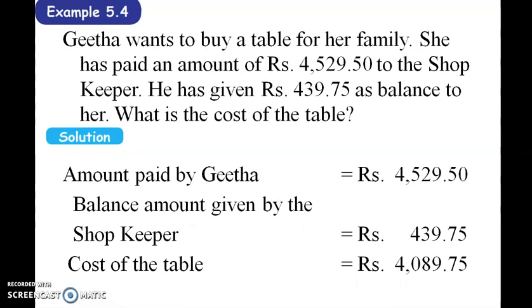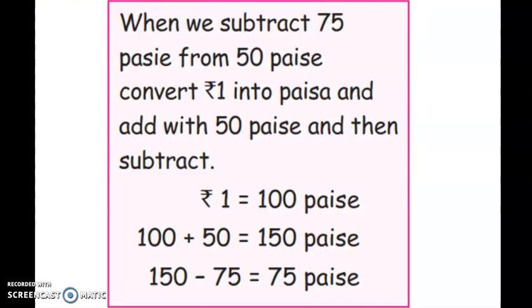Geeta wants to buy a table for her family. She paid Rs. 4,500. The balance is equal to 4,500 minus the cost of the table. To subtract, convert 1 into 5, add with the digits, and then subtract to find the solution.